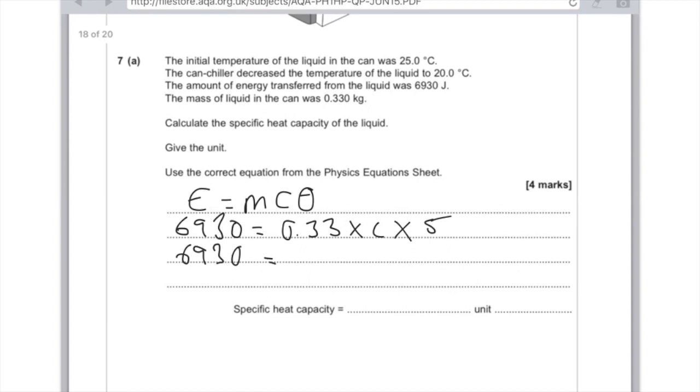So 0.33 times 5 is 1.65C, and therefore C equals 6,930 divided by 1.65 to give us an answer of 4,200.